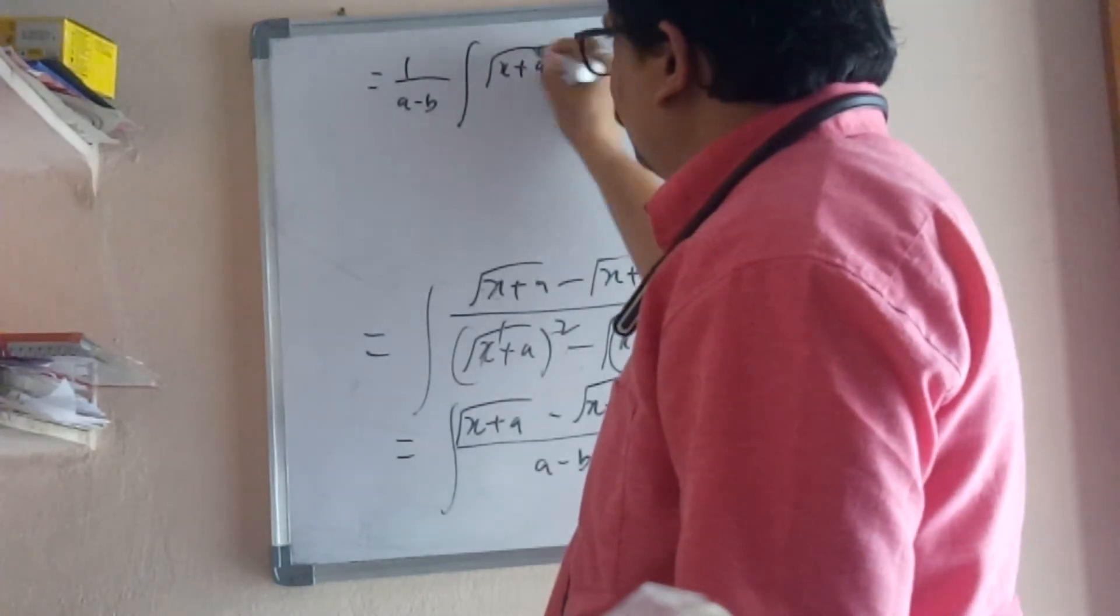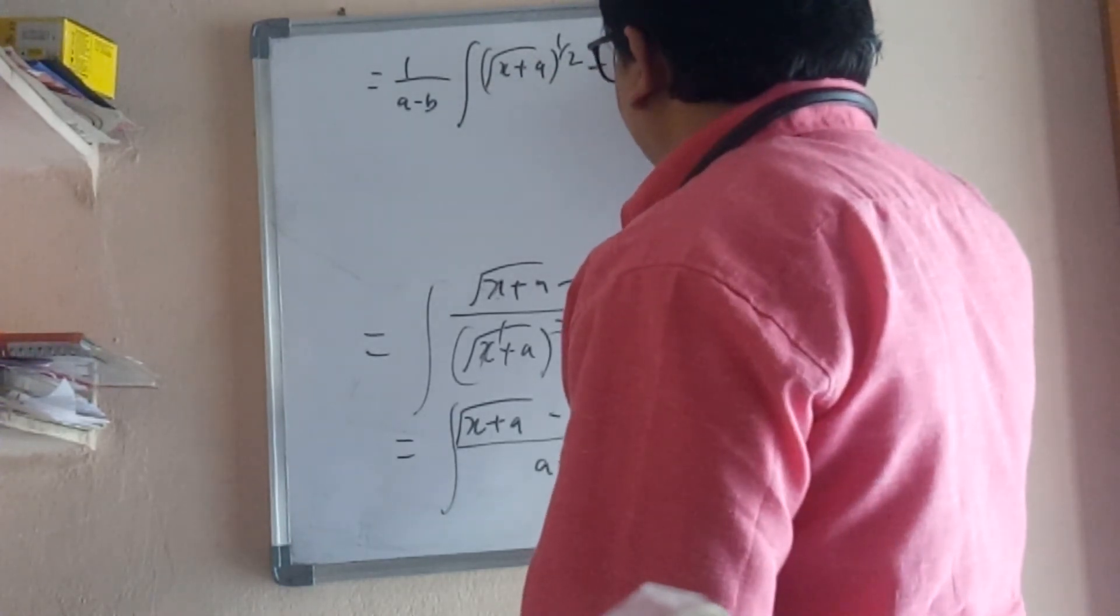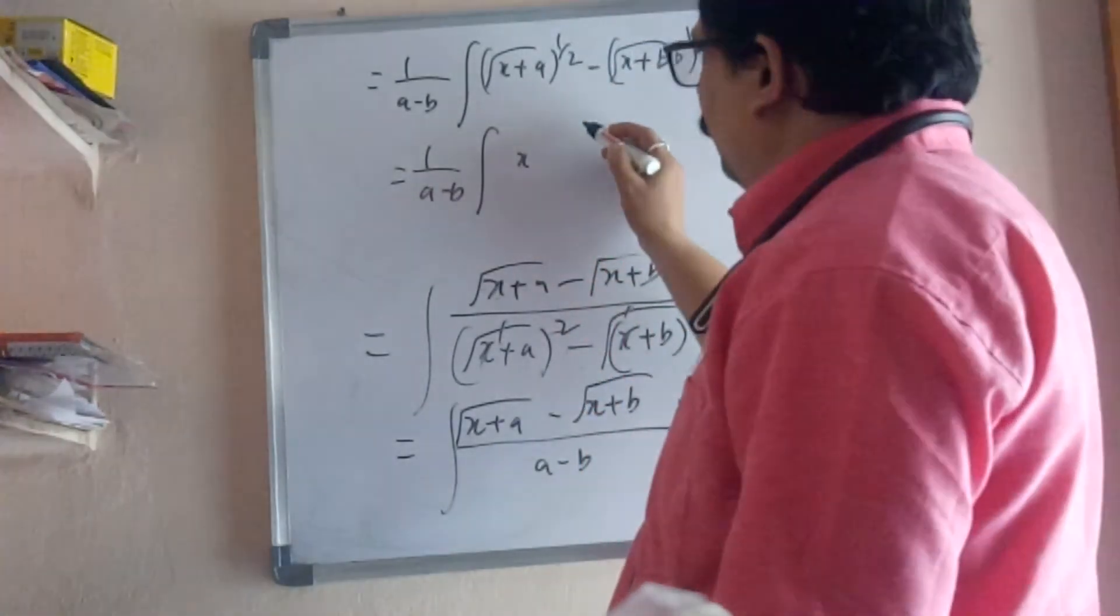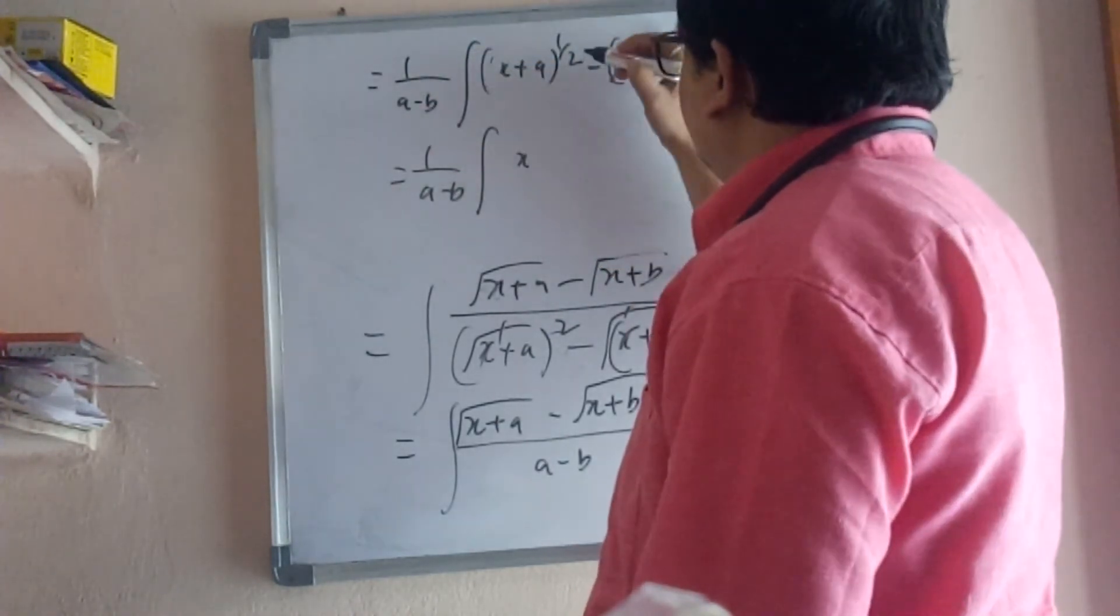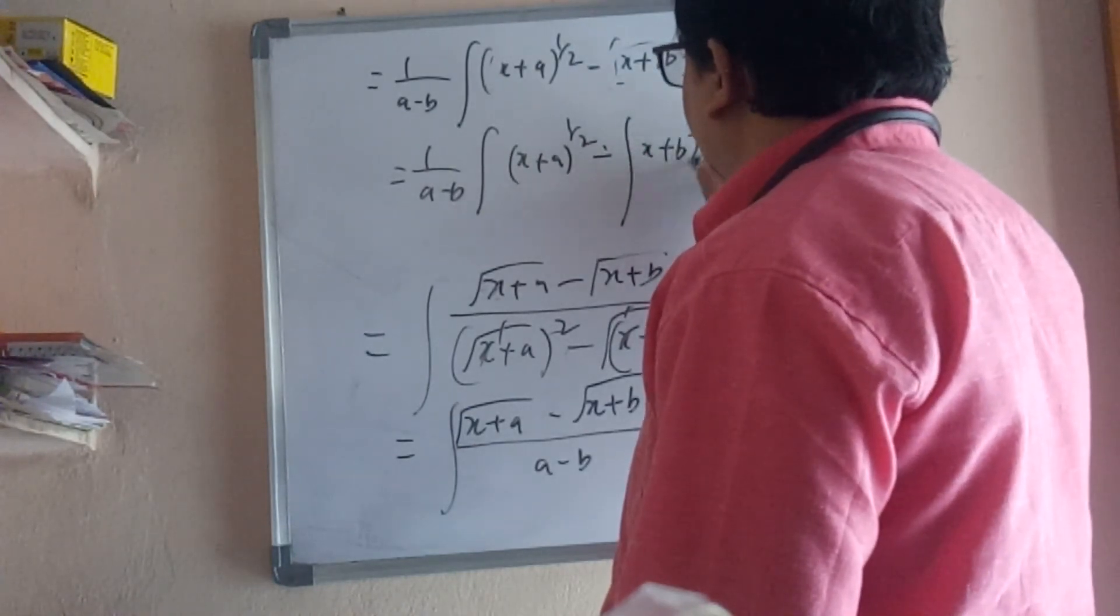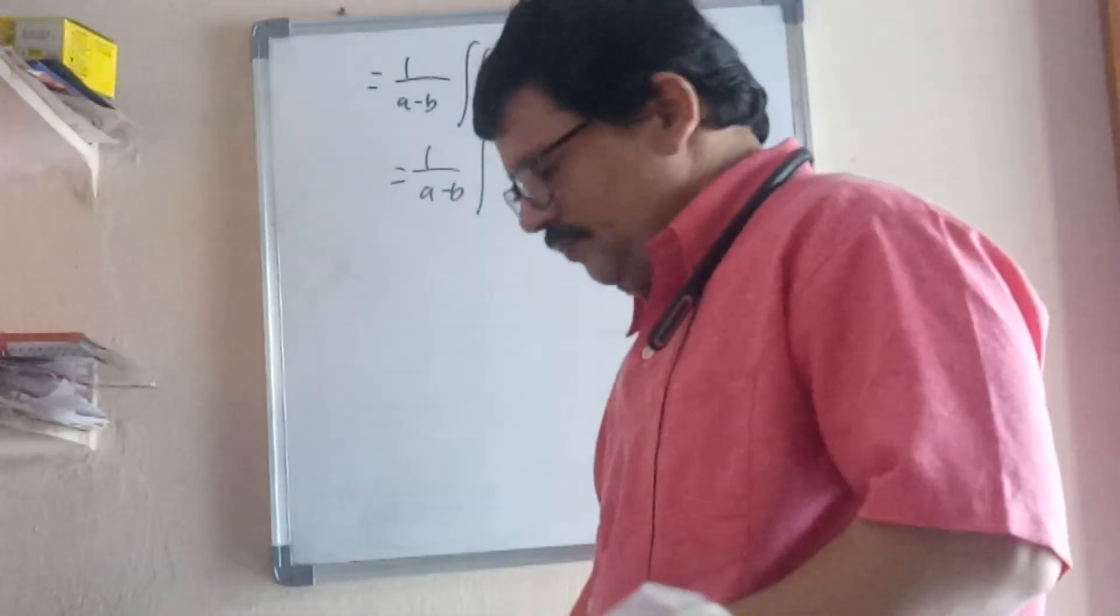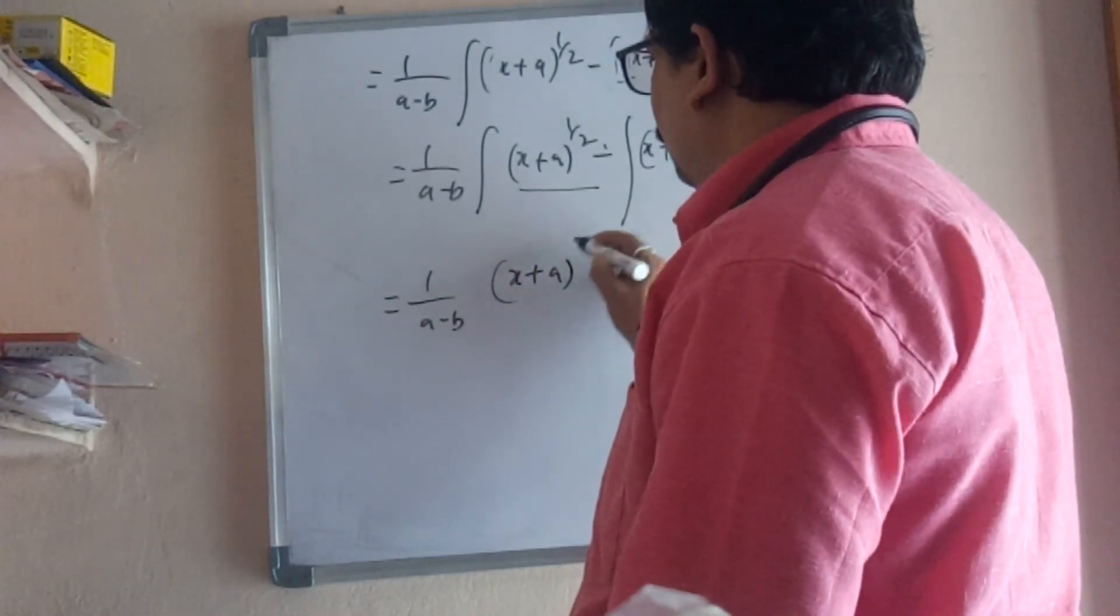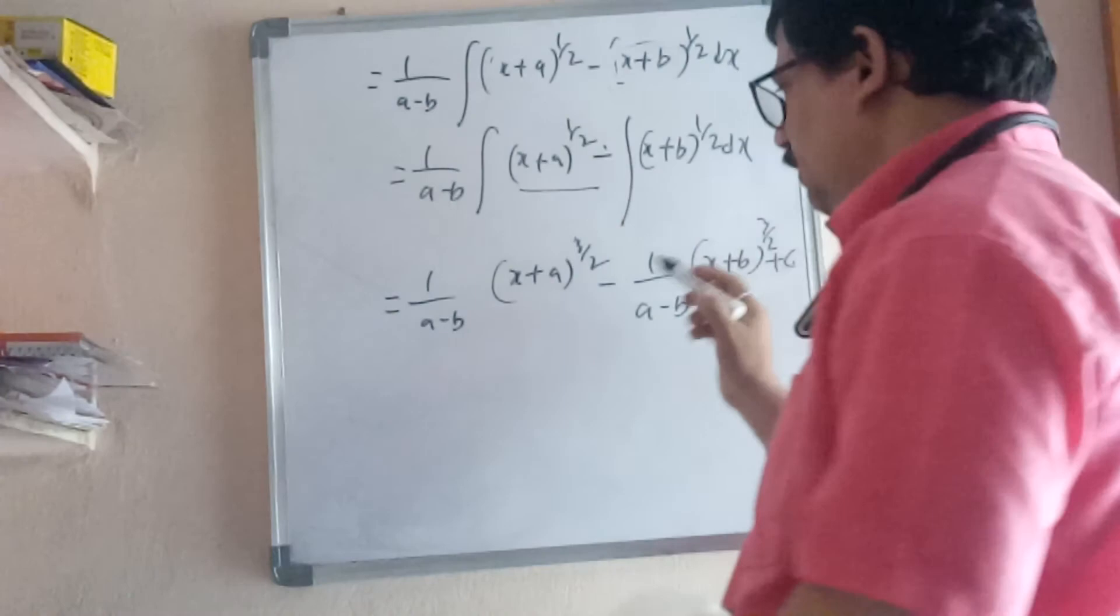Now 1/(a-b) integral of (x+a)^(1/2) dx minus (x+b)^(1/2) dx. This equals 1/(a-b) times [(x+a)^(3/2)/(3/2) - (x+b)^(3/2)/(3/2)] + C. Final answer: 2/(3(a-b)) times [(x+a)^(3/2) - (x+b)^(3/2)] + C.